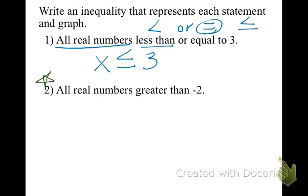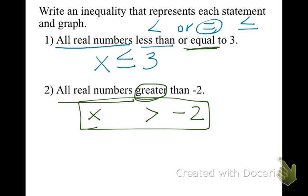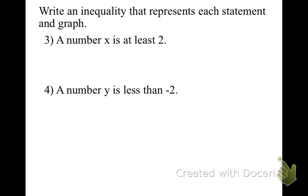Go write down number two and try to solve it on your own. Let's see what it's telling us: all real numbers — we'll call that x — greater than negative 2. Remember, there's no or equal to, so the 'or equal to' part should not be there. All it's telling us is that x is greater than negative 2.